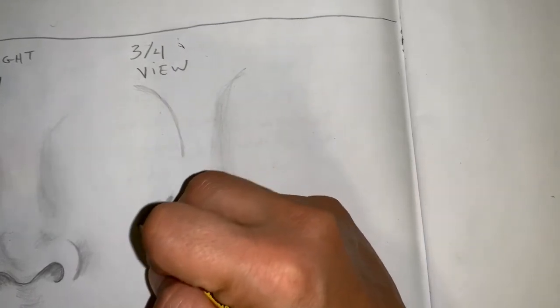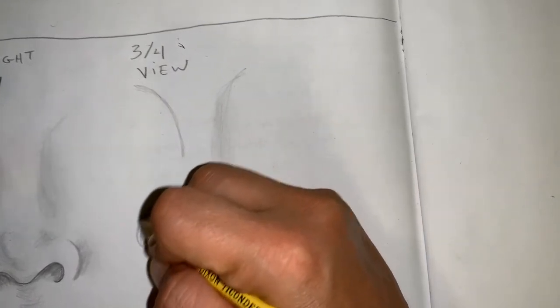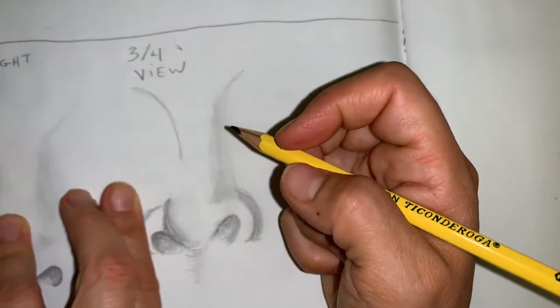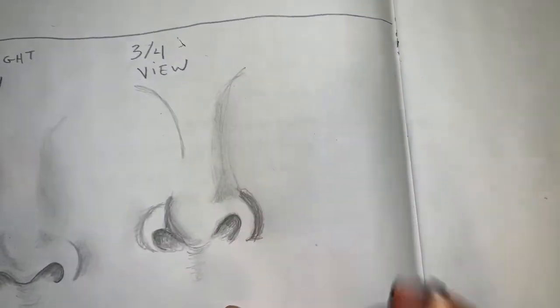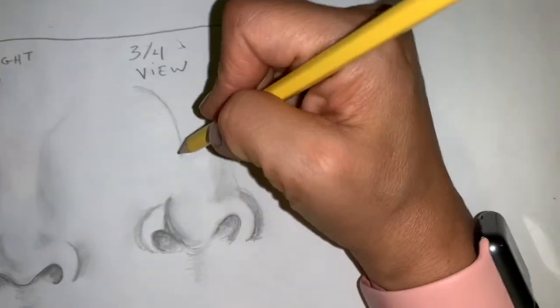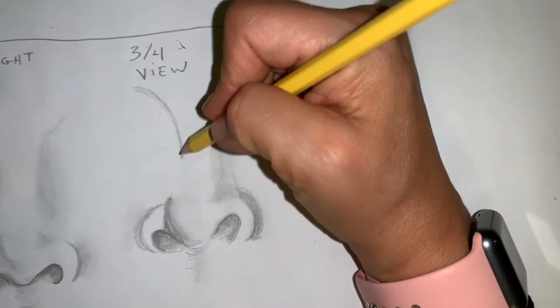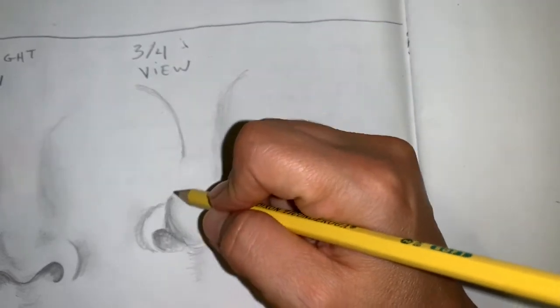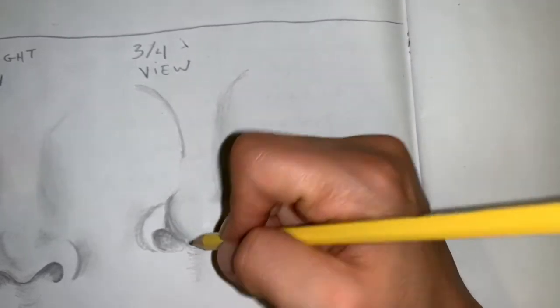Add a little bit to the outer edge. It's coming along. I could work on it all day, so I'm not going to. We're just going to have the illusion of the nose, three-quarters view.